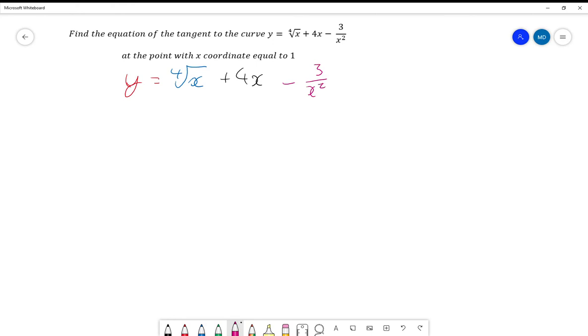Now, how do we rewrite that? Well, it's going to be written as y equals, and we've got the fourth root of x, so that's going to be x to the power of one quarter. 4x is just 4x still. And 3 over x squared, well, that's minus 3 times by x to the minus 2, because when we're dividing by a power, it's a negative power.